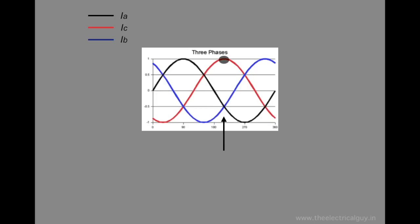IC is equal to maximum and IB equals to IA is equal to minus 0.5 Imax. So if we add these return currents, we will get the sum equals to zero. And this is true for every instance.